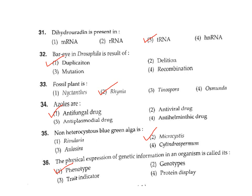Question 32: The bar eye in Drosophila is the result of what? The bar eye structure in Drosophila results from duplication of the 16A region of the chromosome. Correct answer Option 1.